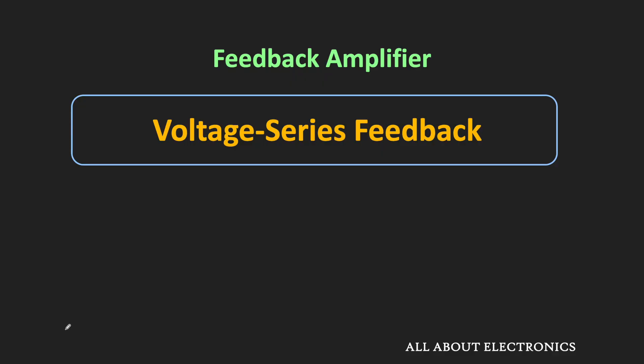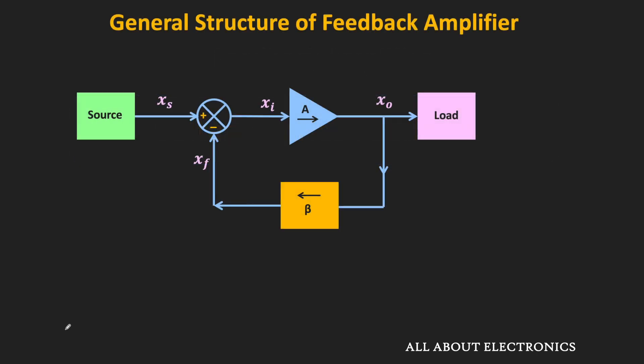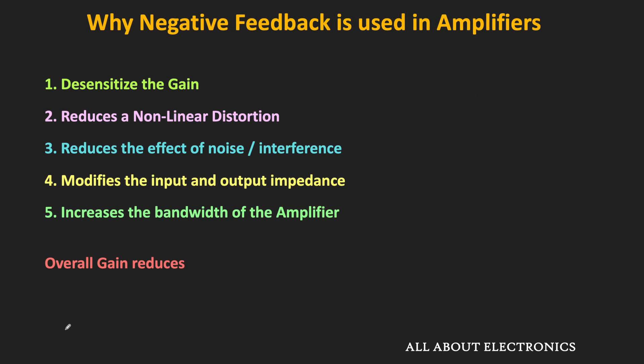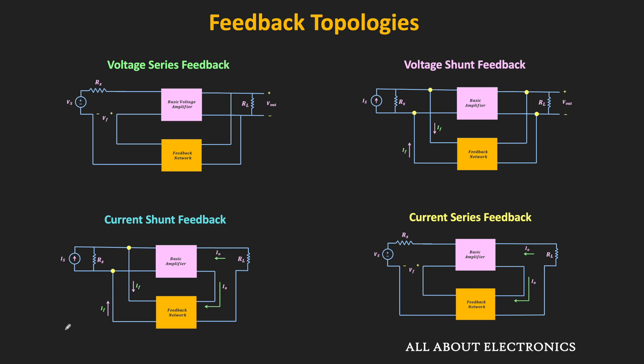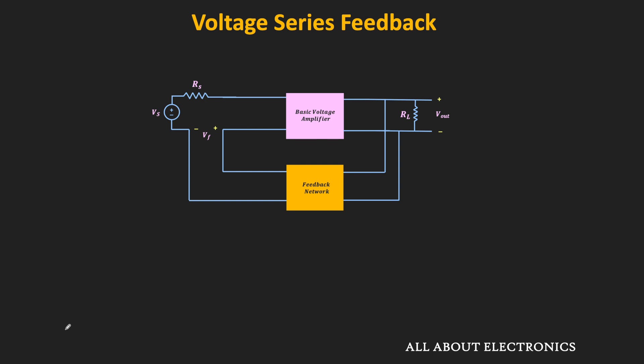Hey friends, welcome to the YouTube channel all about electronics. In this video, we will learn about the voltage series feedback topology in detail. In the last couple of videos on the feedback amplifier, we have seen the general structure of the feedback amplifier, the effect of negative feedback, and the four different feedback topologies: voltage series, voltage shunt, current shunt, and current series feedback.